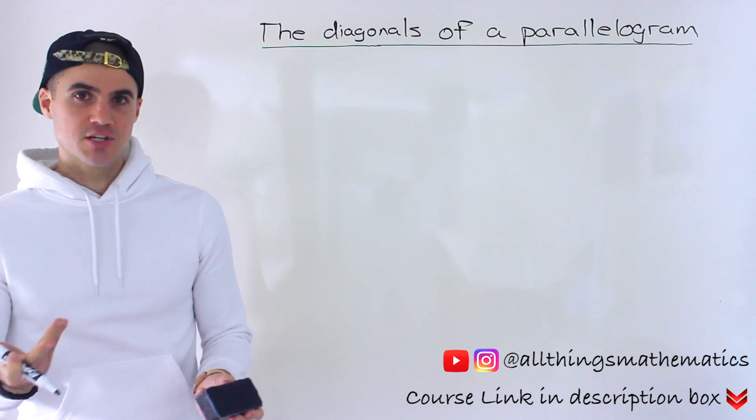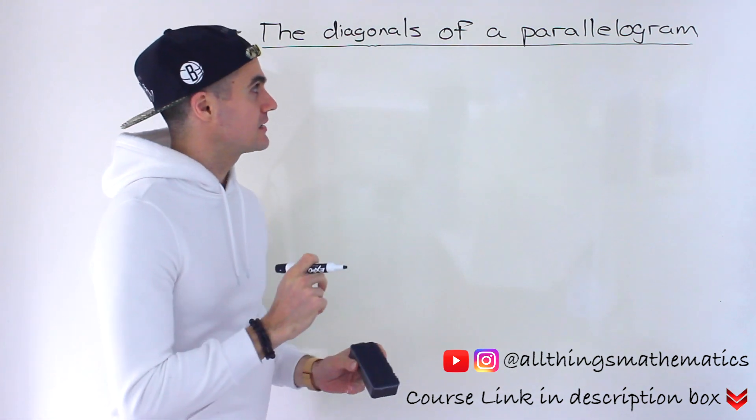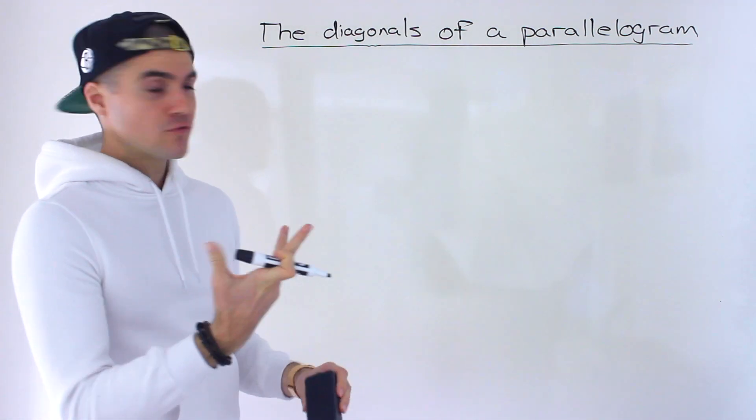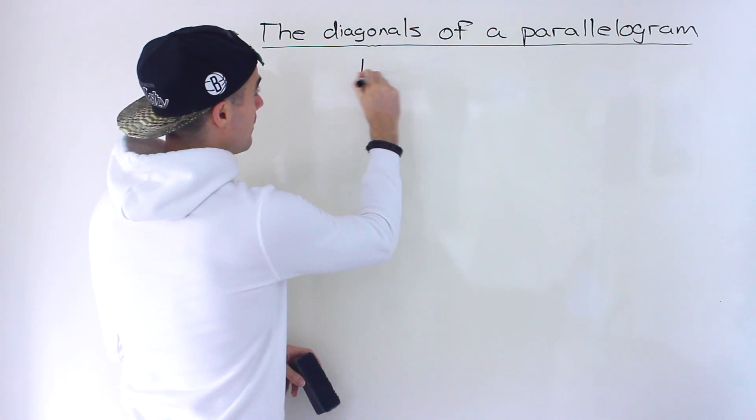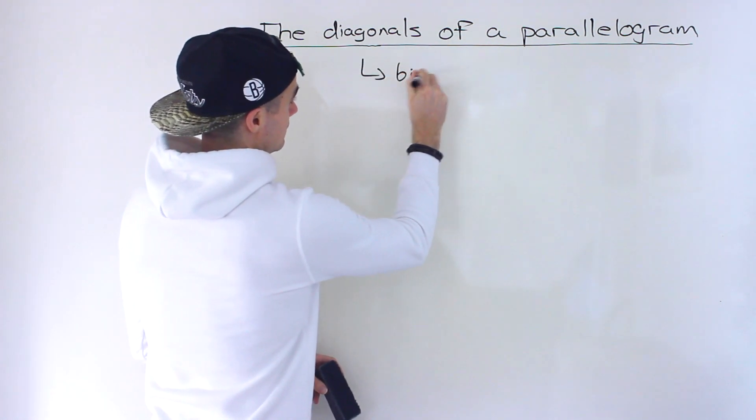You've probably seen this in your textbook and your teacher has probably mentioned it, but basically the main property for the diagonals of a parallelogram is that they bisect each other.